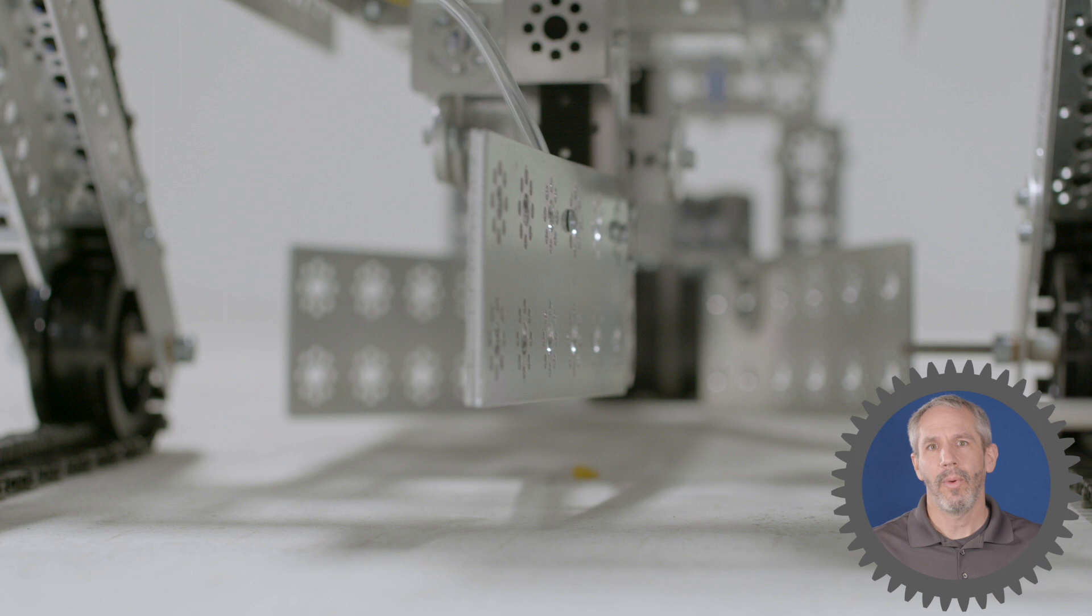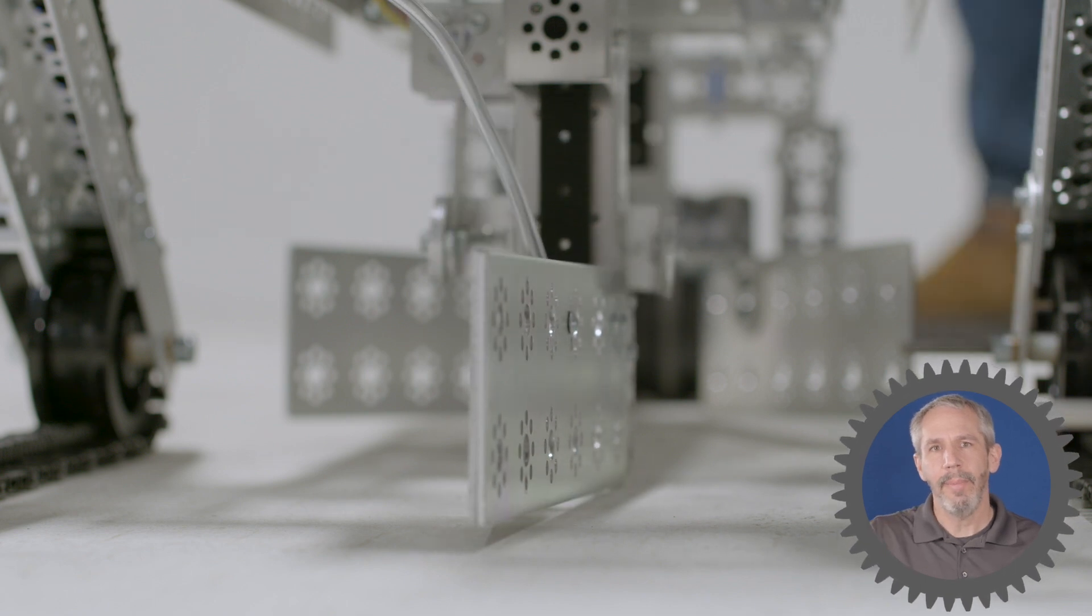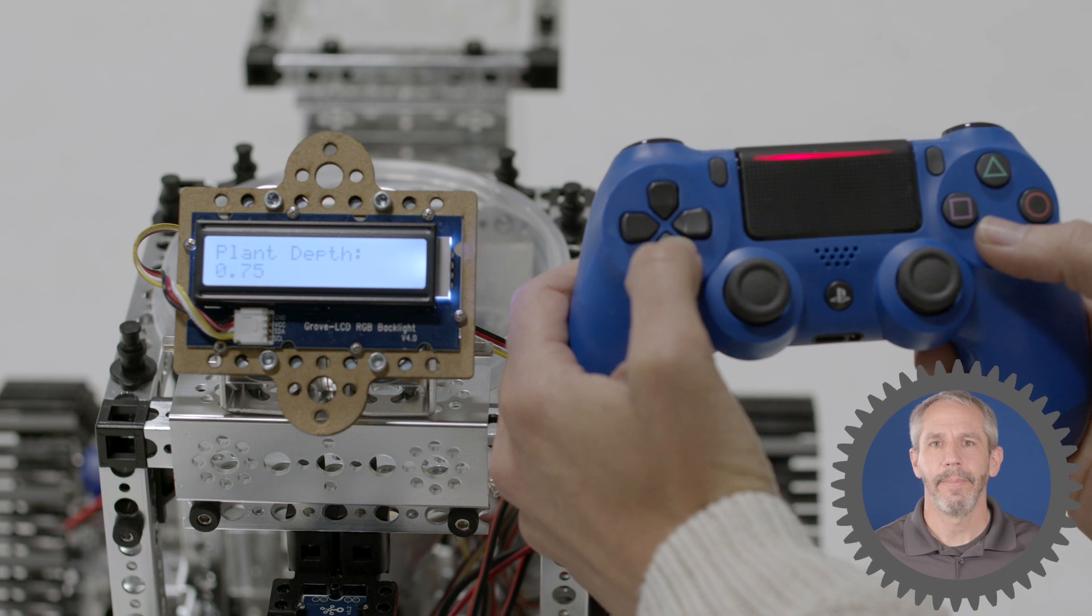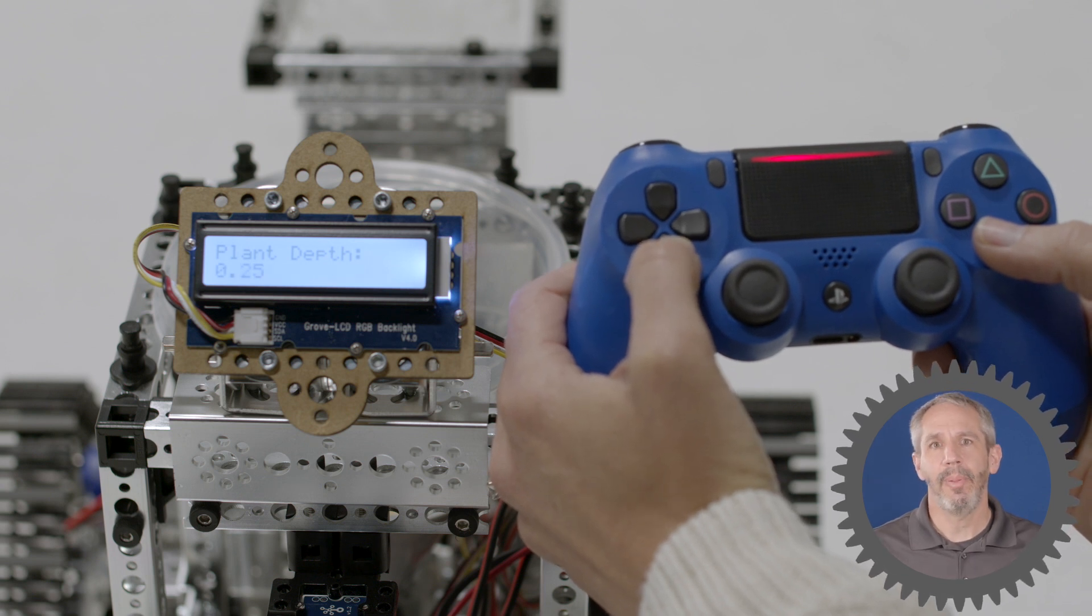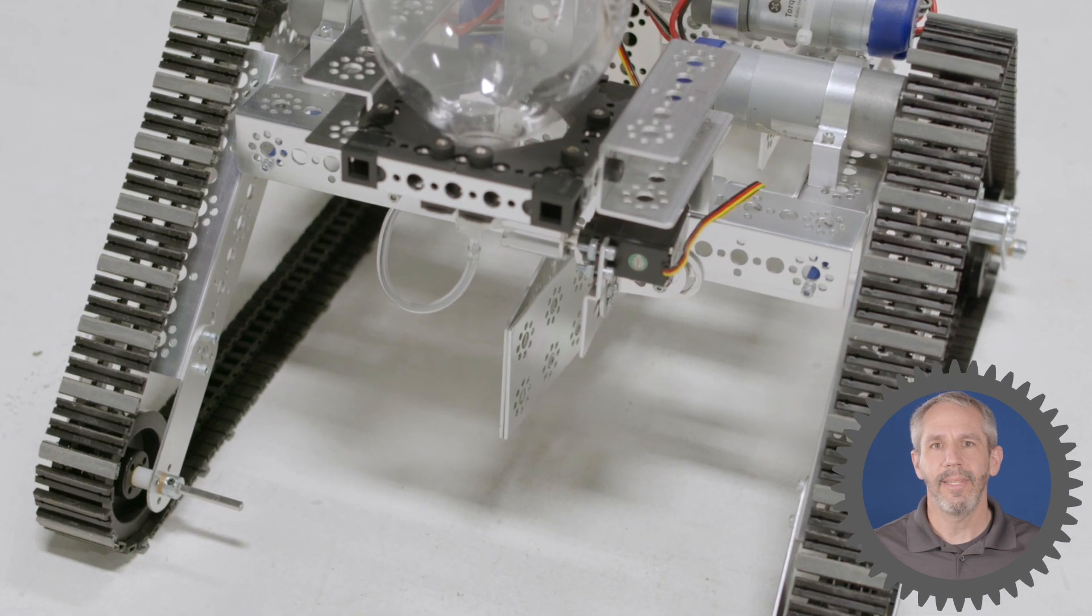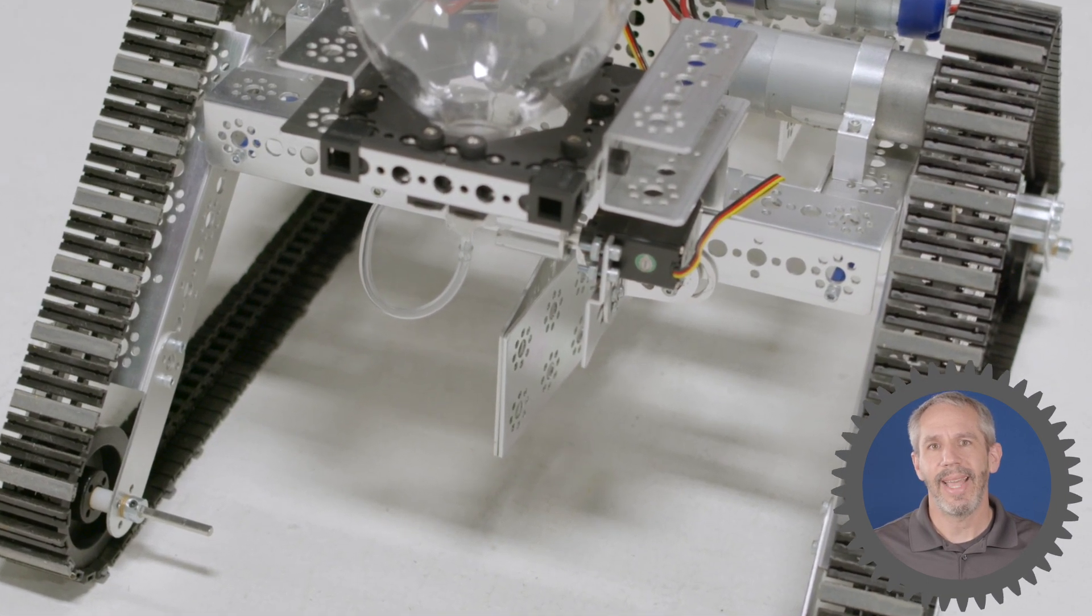The planting depth works in a similar way. The plow is driven up and down by a torque NATO motor that's connected to a rack and pinion gear. Whatever I input as the planting depth, the program can then calculate the number of encoder counts that the motor needs to rotate to achieve that exact depth.